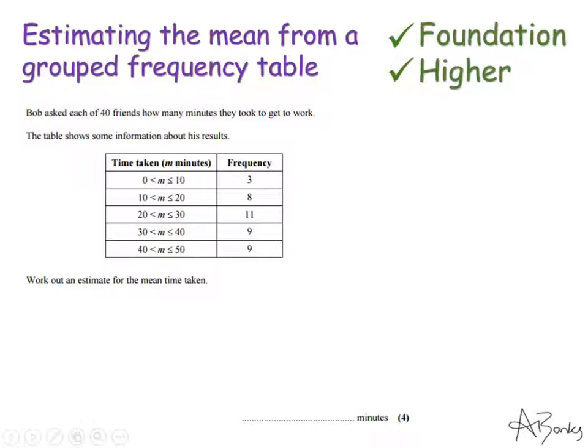So what I'm going to do is I'm going to use the midpoints. So I'm going to assume that these three people each took five minutes to get to work. That's how we have a sensible estimate. Sometimes they can ask you in an exam why is this an estimate? Why are we not calculating the mean? And it's for this reason. It's because we don't have the exact data. We are estimating by using midpoints.